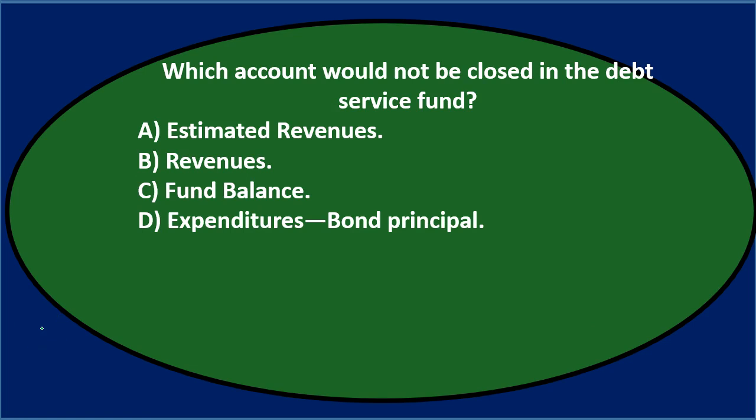Next question. Which account would NOT be closed in the debt service fund? Either A, estimated revenues; B, revenues; C, fund balance; or D, expenditures — bond principal. Let's go through this again using the process of elimination. We're thinking about closing entries — those entries at the end of the time period.